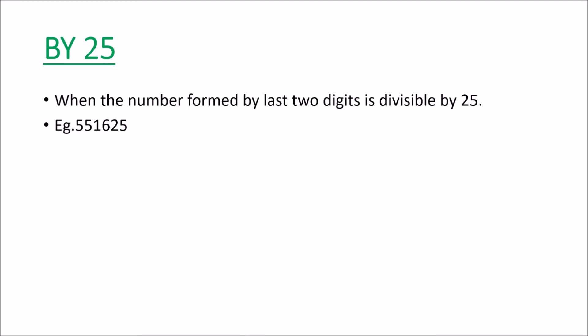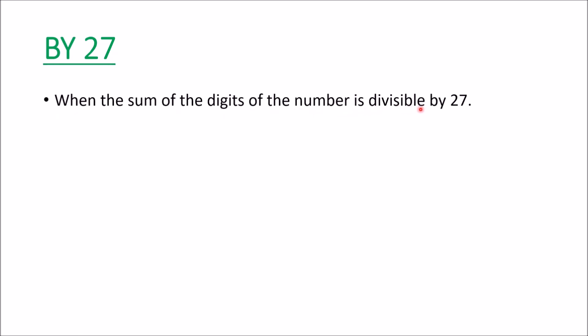Any number is divisible by 25 when the number formed by the last two digits is divisible by 25. For example, if the last two digits are 25, and since 25 is divisible by 25, the whole number is divisible by 25. Now for divisibility by 27: any number is divisible by 27 when the sum of its digits is divisible by 27. For our example, the sum of the digits is 27, which is divisible by 27, so the whole number is divisible by 27.